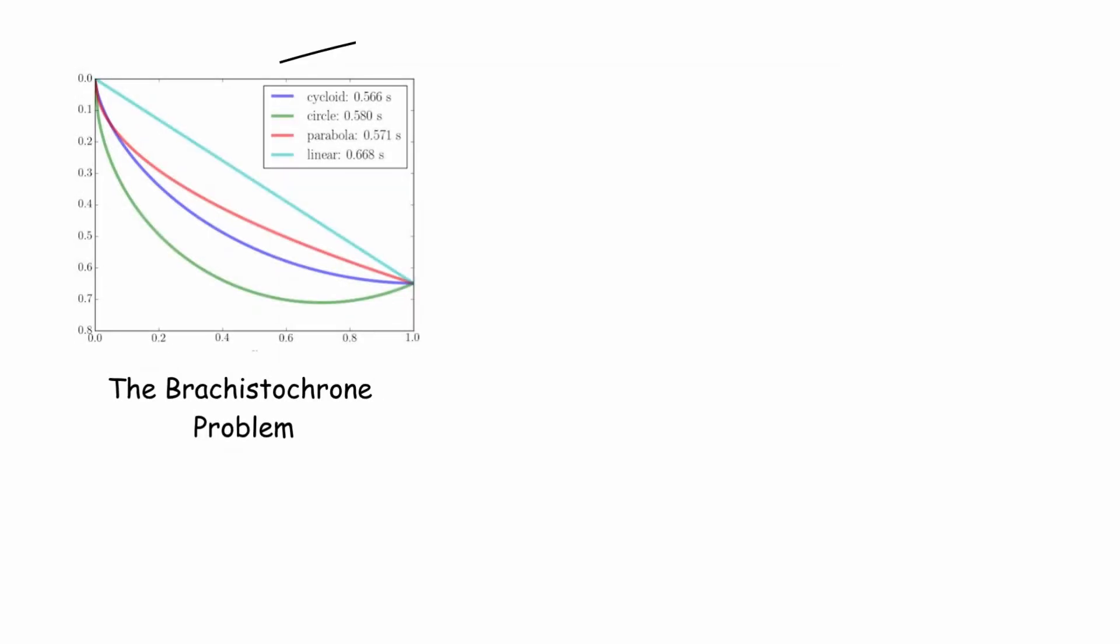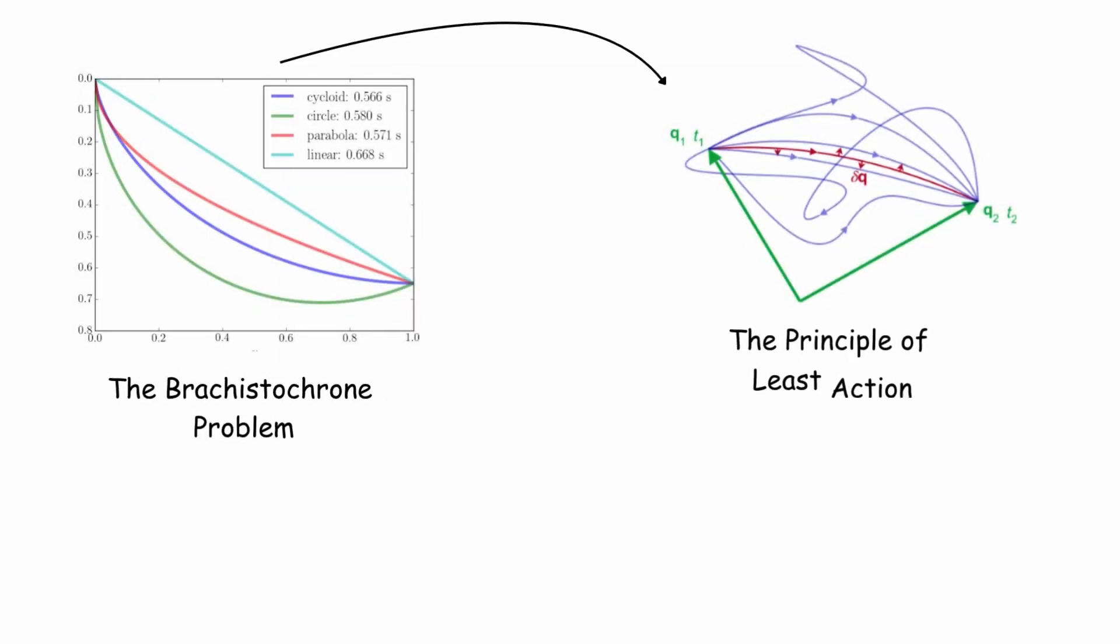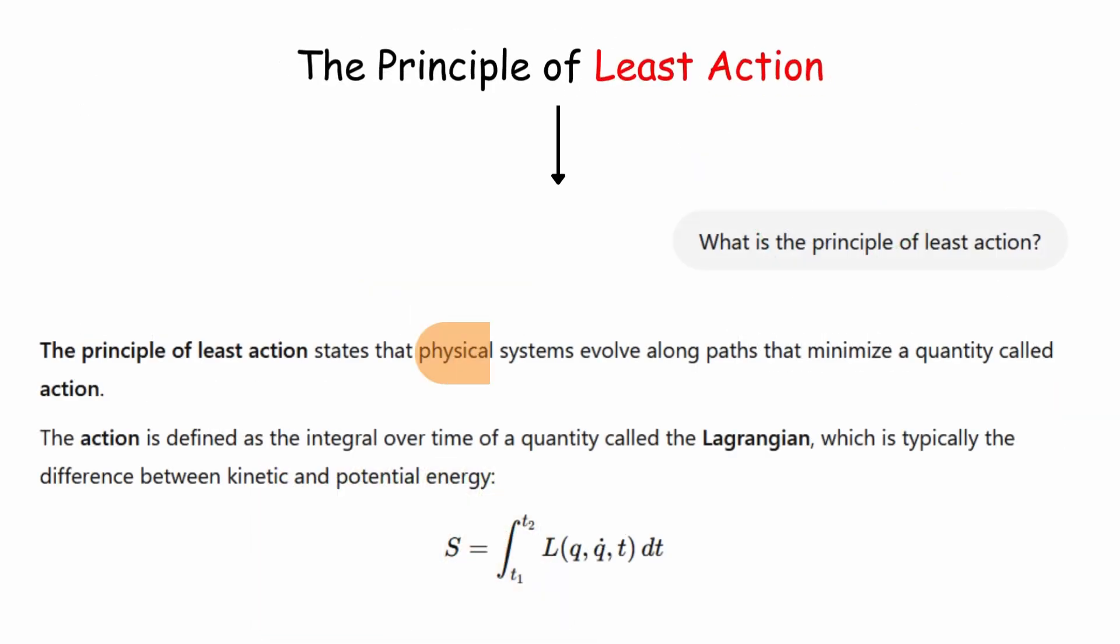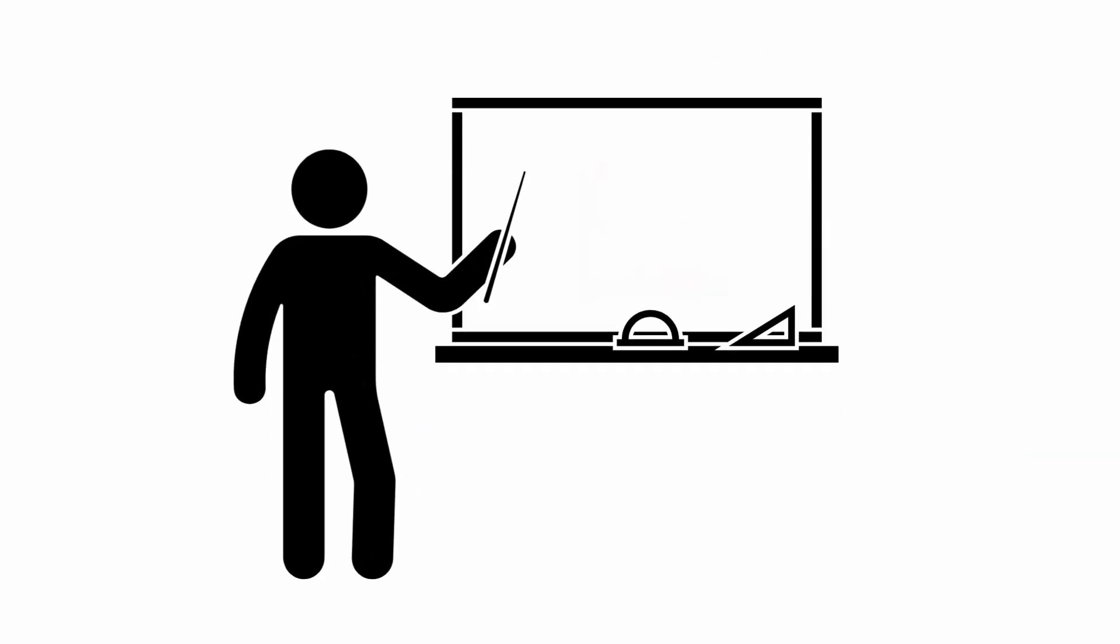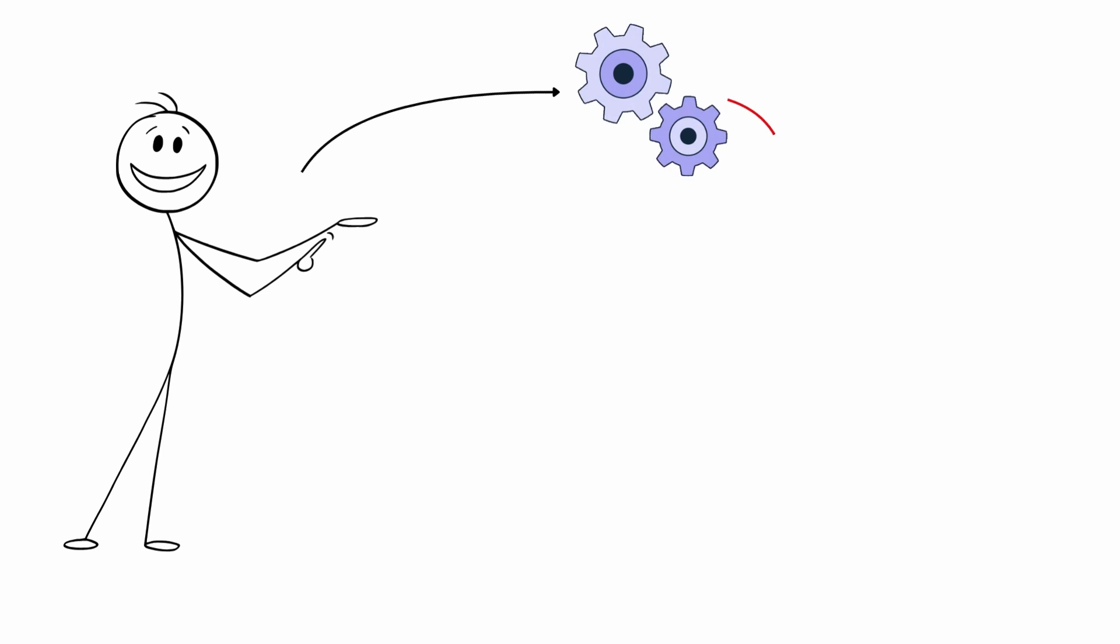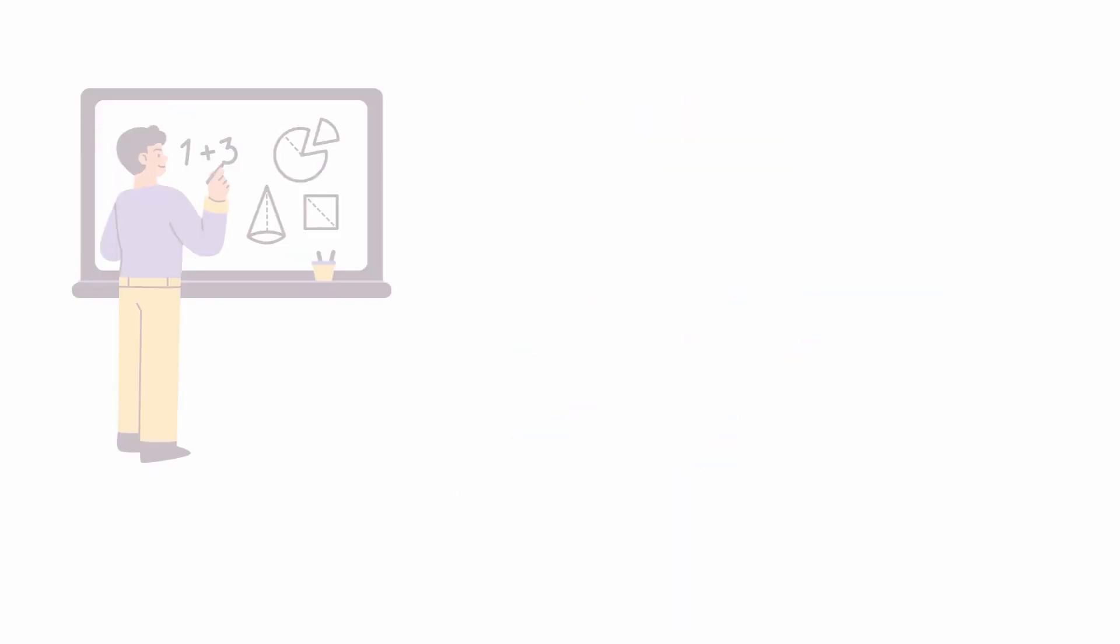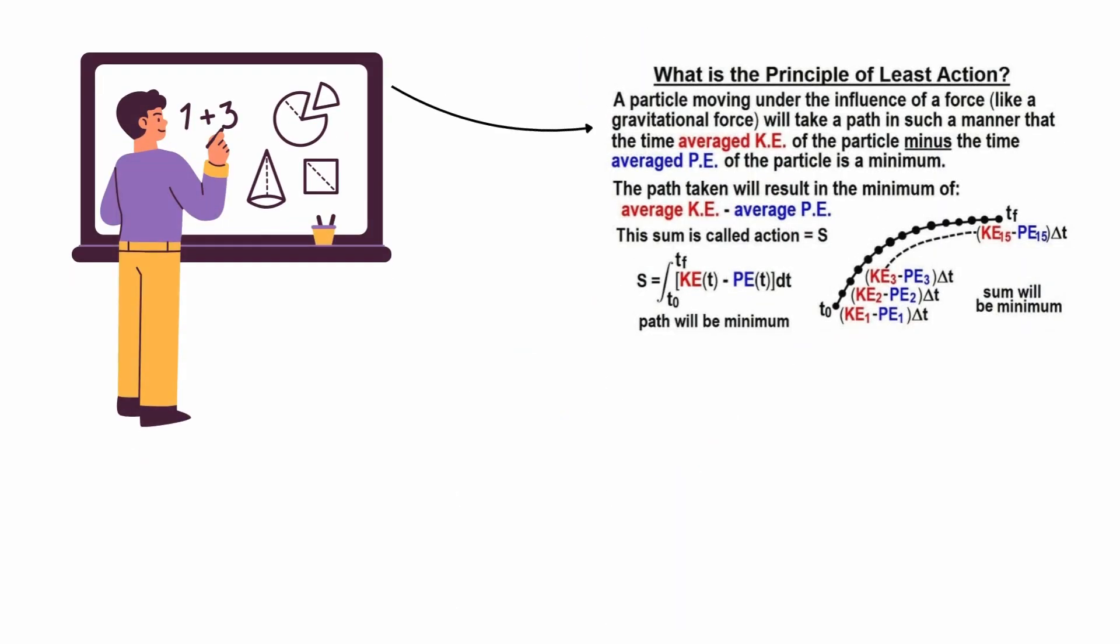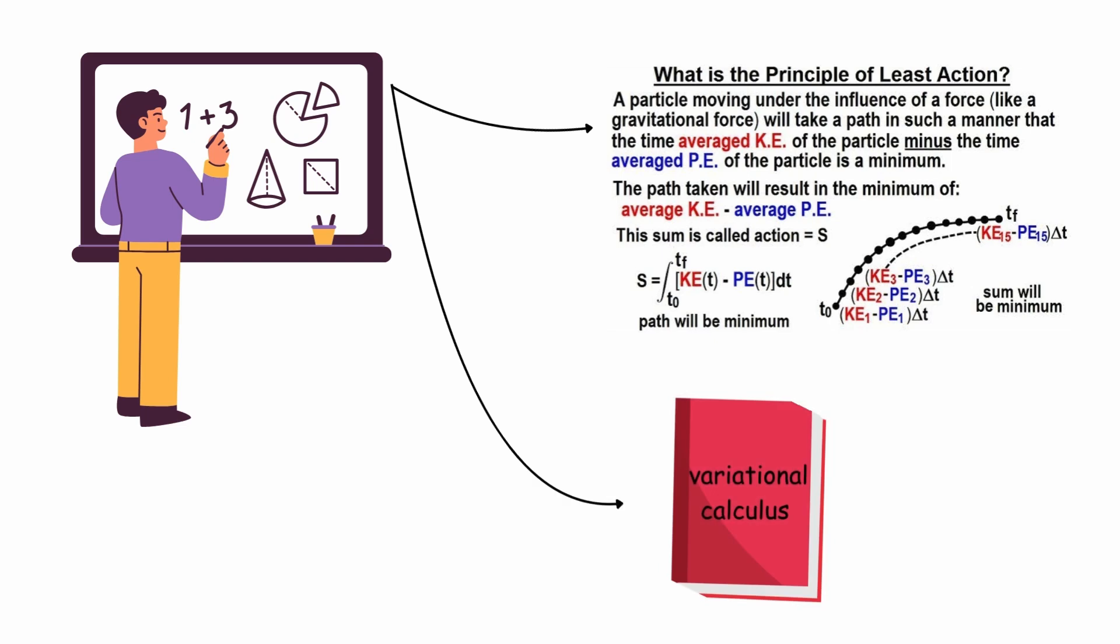The Brachistochrone problem is also related to the principle of least action, a fundamental idea in physics. This principle states that physical systems evolve along paths that minimize a quantity called action. To find the optimal curve in the Brachistochrone problem, it is necessary to formulate a differential equation that describes its shape. To do this, the principle of least action and variational calculus are used.